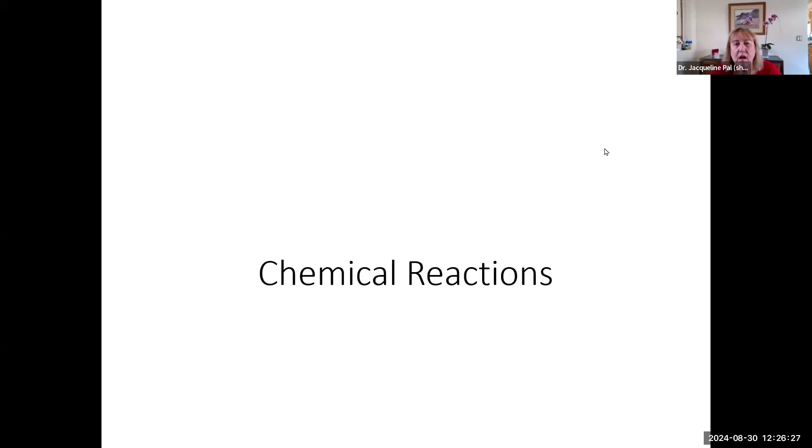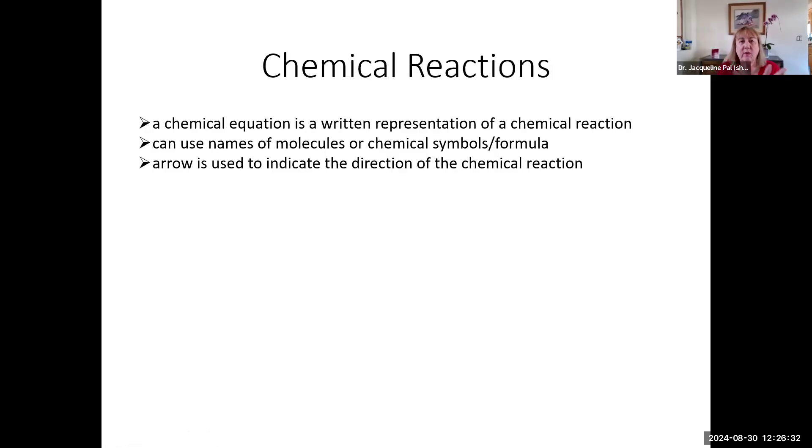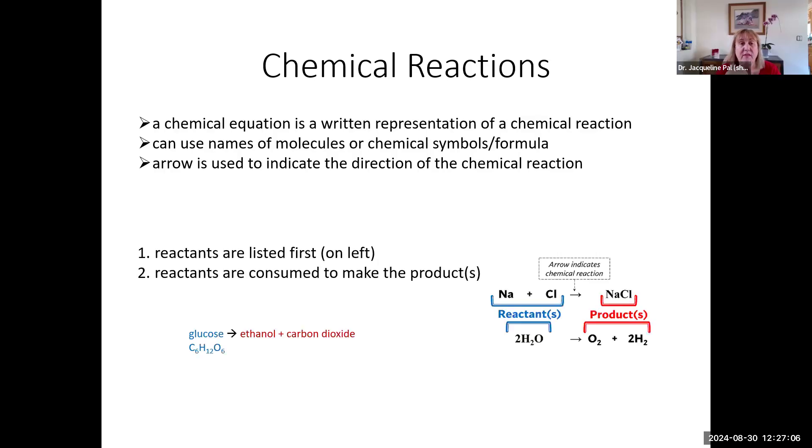In this section, let's learn all about chemical reactions. Chemical reactions are written representations of what's happening in the reaction. We can either talk about the names of things or write down the chemical symbols and formulas. We put an arrow to indicate the direction of the reaction because sometimes we can have the same molecules and the reaction can go in either direction.